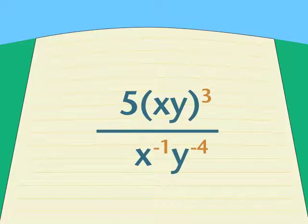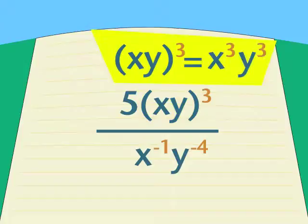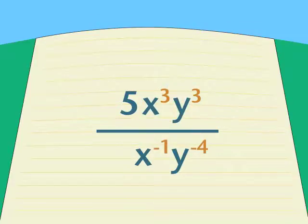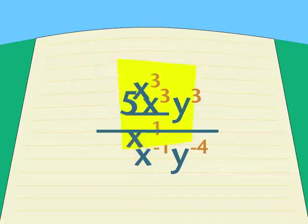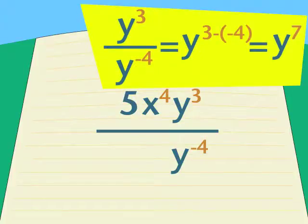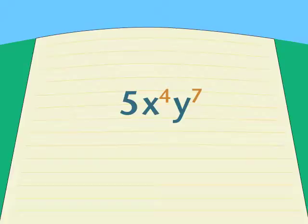That looks less messy already. Then we can take that xy to the third on the top and rewrite it: x to the third, y to the third. And it still means the same thing. That lets us use the rule for division. Remember, subtract exponents, top minus bottom. Subtract the exponents for the x's first, and then the y's. We do them as two separate problems and end up with an exponent of 4 for x and 7 for y.